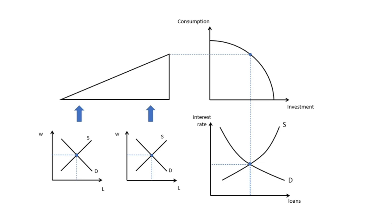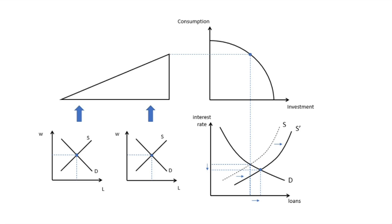Let's do the sustainable growth example across all four graphs with an increase in savings. People voluntarily decide to consume less and save more — they offer more money to people who would like to borrow it. So there's an increase in the supply of loanable funds: notice a lower interest rate and an increased amount of loans. Since the demand curve consists of businesses borrowing to purchase factors of production, we can say there's an increase in investment and a decrease in consumption.